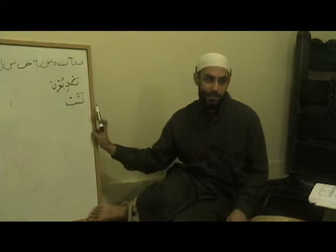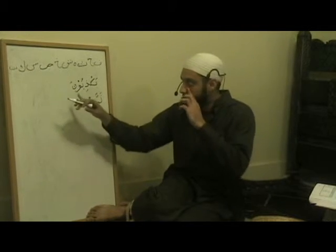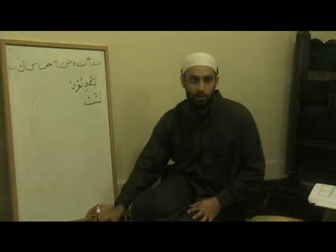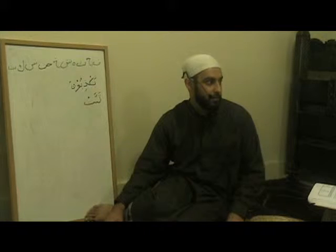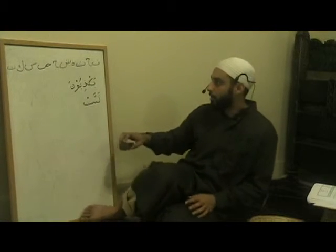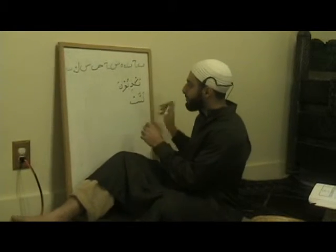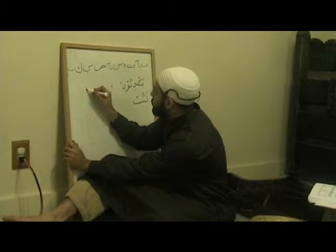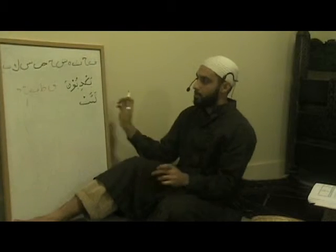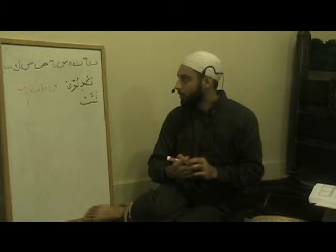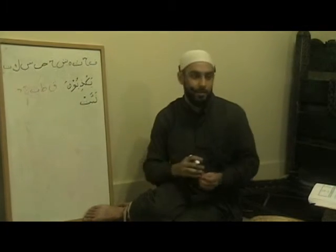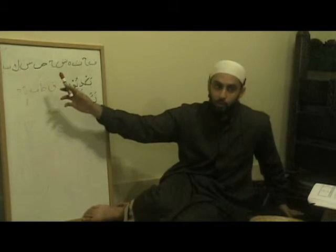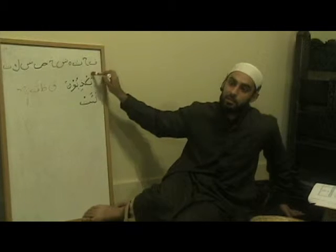The second quality we were going to take today was qalqala — the bouncing one. Most people know this one. And those letters are قُطُبُ جَد. So those are going to be — I'll write them in red. قَفْ طَا بَا جِيم أَنْدَال — which spells قُطُبُ جَد. This is vibrating or bouncing — it's not air coming out.